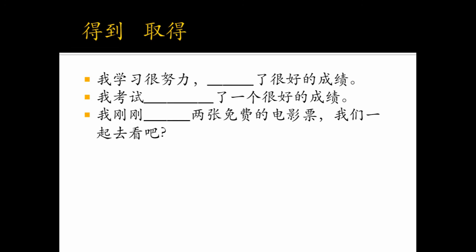好,请你看一下怎么填, how to fill in these blanks. 第一个: 我学习很努力,取得了很好的成绩。第二个: 我考试,得到或取得了一个很好的成绩, because it doesn't state clearly what I did, so you can put either 取得 or 得到 here. 我刚刚得到两张免费的电影票,我们一起去看吧。电影票 are real objects, so we only put 得到 here. 好,今天我们就说到这儿,你学会了吗?下次见。